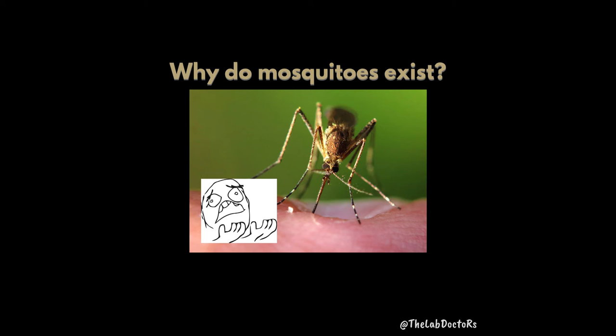Hey guys, welcome back to part two of why some animals exist. We went back and did our research, so now we're going to tell you what we found. The first question is why do mosquitoes exist? So I was actually quite not right — I remembered that mosquitoes exist because they're basically food sources to other animals in the food chain. The mosquito larvae is food for fish, and the adult flies are food for frogs, birds, and bats. Interestingly, I found out that mosquitoes are also pollinators.